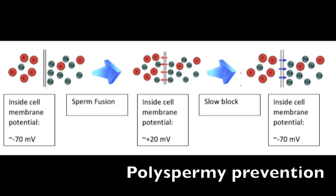The first is called the fast block. The fast block works via usage of membrane potential and electric charge. When the first sperm binds to the egg and penetrates its membrane, the potential inside of the egg changes to about +20 millivolts.